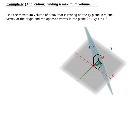In this example, we want to find the maximum volume of a box that is resting on the xy-plane with one vertex at the origin and the opposite vertex in the plane 2x + 4y + z = 8. This is what we see to the right here.